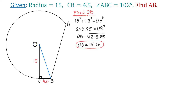In the next step, we will find the angle OBC. In this right triangle, side OC is opposite this angle and side CB is the adjacent side. To find this angle, we use the tangent function. In a right triangle, the tangent of an acute angle equals the opposite side divided by the adjacent side.